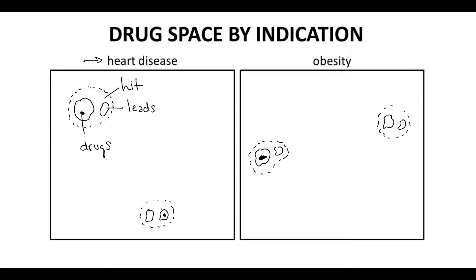So if we look at these spaces, they are different. These spaces don't overlap between heart disease and obesity. That's because these two conditions would have different targets, and drugs that bind different targets are going to show up in different spaces in this overall drug space.